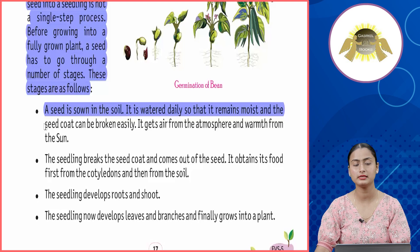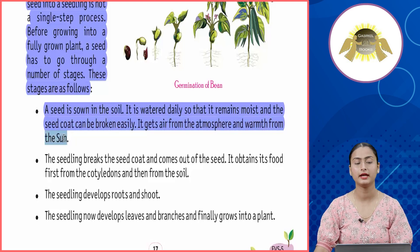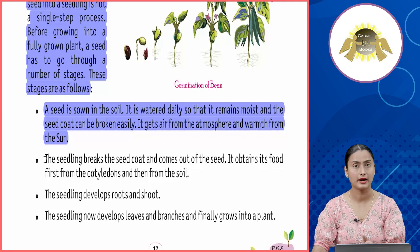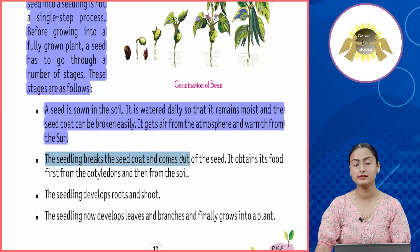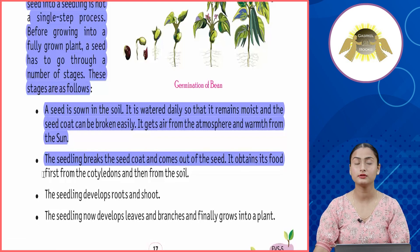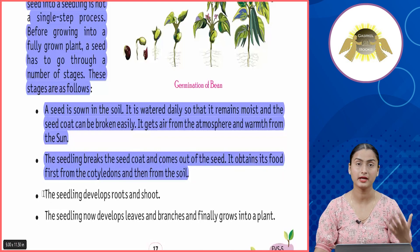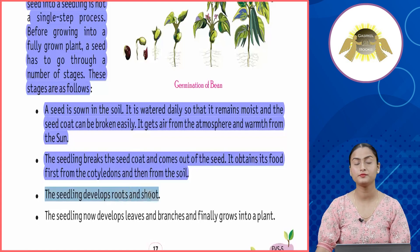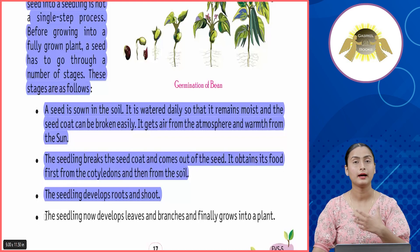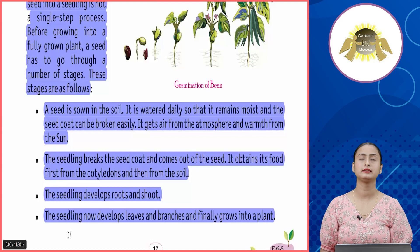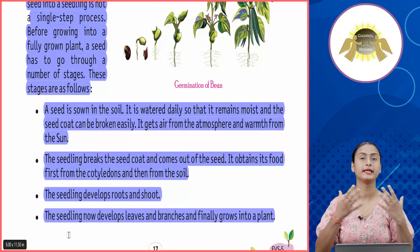The stages of germination are as follows: a seed is sown in the soil and watered daily so it remains moist and the seed coat can be broken easily. It gets air from the atmosphere and warmth from the sun. The seedling then breaks the seed coat and comes out, obtaining its food first from the cotyledons and then from the soil. The seedling develops roots and shoots, then leaves and branches, and finally grows into a full plant.